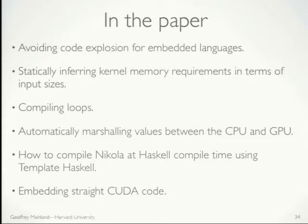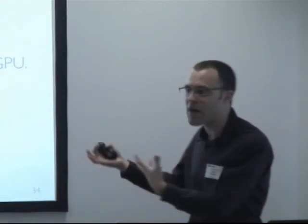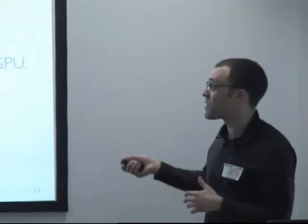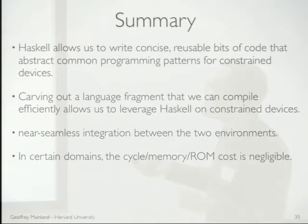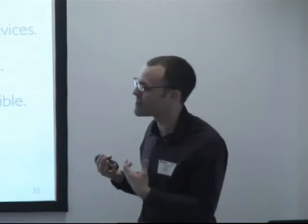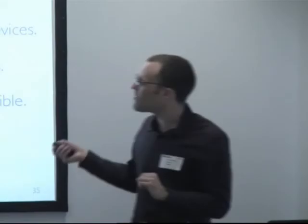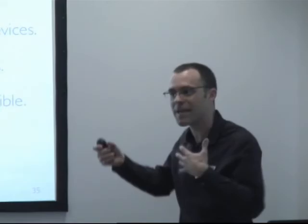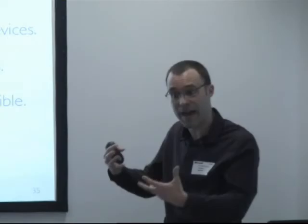Problems I don't have time to fully cover include code explosion, statically inferring the memory size to allocate on these devices, compiling loops, managing marshalling, compiling Nikola at Haskell compile time using template Haskell, and embedding plain old CUDA code. The point overall is that Haskell allows us to write nice, concise programs using reusable high-level abstractions. By carving out language fragments that we can compile efficiently on these devices, we can still use Haskell to piece together these components in a useful way and write code that actually runs on these constrained devices.